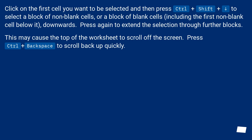Click on the first cell you want to be selected and then press CTRL plus SHIFT plus End to select a block of non-blank cells, or a block of blank cells including the first non-blank cell below it, downwards. Press again to extend the selection through further blocks.